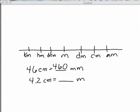you can see that centimeters to meters is two spaces to the left, which means you have to move the decimal point two spaces to the left as well. If I move the decimal point two spaces to the left in 4.2, I have to add a zero in front of the four to move it the two spaces. So the answer would be 0.042 meters.